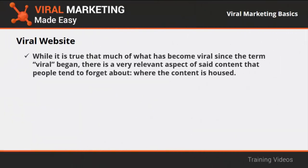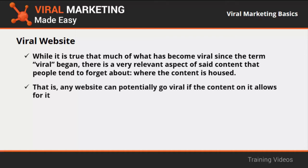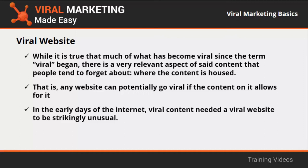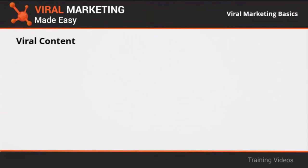The first core element is the viral website. While much content has gone viral, people tend to forget about where the content is housed. Any website can potentially go viral if the content on it allows for it, but if you want something to go viral intentionally, you need to add viral levers. A viral website just needs to be responsive, search-engine friendly, and host trending, high-quality content.